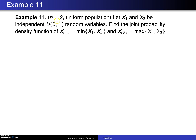In this case, we're going to assume that we have two observations, x1 and x2. We're also going to assume a uniform population — more specifically, we'll let x1 and x2 be independent Uniform(0,1) random variables. We want to find the joint probability density function of x(1), the minimum of x1 and x2 (that's the first order statistic), and x(2), the maximum of x1 and x2.